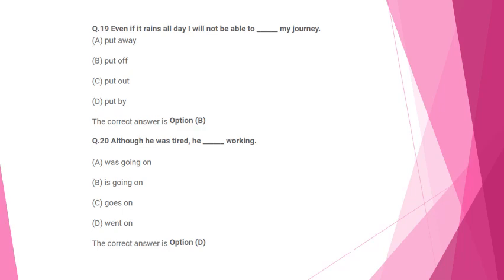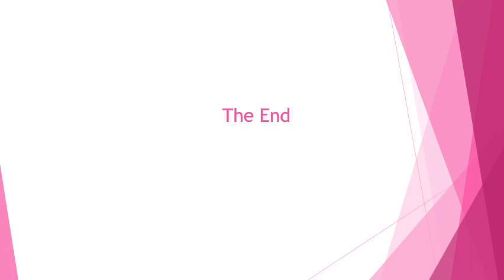Even if it rains all day, I will not be able to put off my journey — 'put off' means postpone or delay, so I will definitely go. 'Although he was tired, he went on working' — 'go on' means continue, so he continued working. That's the end of the first session on sentence improvement. Learn the rules of grammar, refer to Wren and Martin grammar book, and you'll definitely be able to do well in the UPSC CAT examination. Thank you.